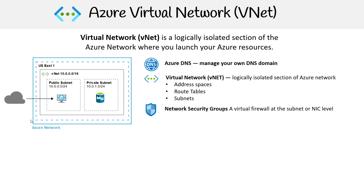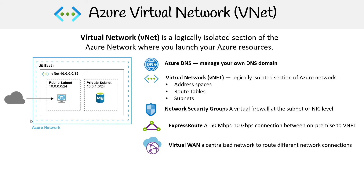Then you have Network Security Groups, which act as a virtual firewall at the subnet or NIC level. You have ExpressRoute, which helps you create a very fast connection between your on-premises environment and your VNet. Then you have Virtual WAN, which is a centralized network to route different network connections.